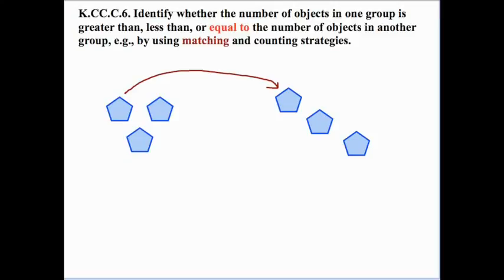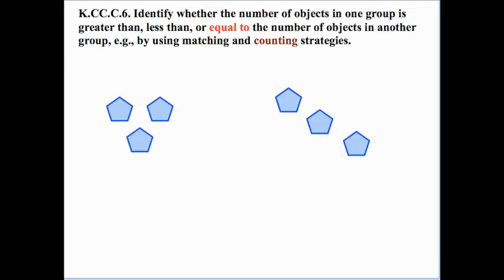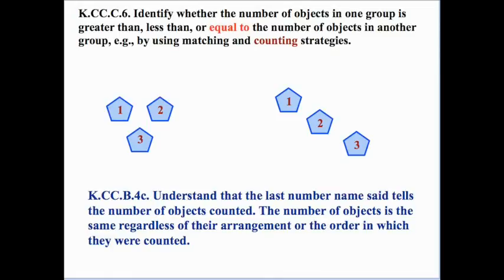The standard says to use matching and counting strategies, so let's look at matching. In this example, we match one from the first set to one in the second, then match the next pair, then the third. This works fine as long as we have small amounts. Now for the counting strategy: we count the quantity on the left — we have three — and on the right we count again and also have a quantity of three.